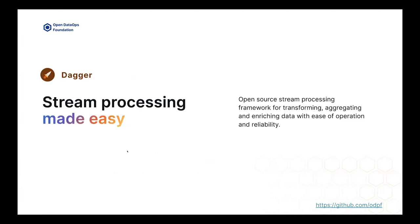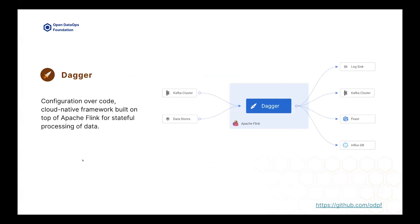That's where Dagger comes into the picture. Dagger is stream processing made easy — it's an open source platform framework that allows you to transform, aggregate, and enrich data with ease of operation and reliability. Dagger is built on top of Apache Flink. At a high level, it takes certain data sources — batch as well as stream — aggregates and transforms the data given the logic the user provides, and then syncs it back to different sources, one of them being Feast.